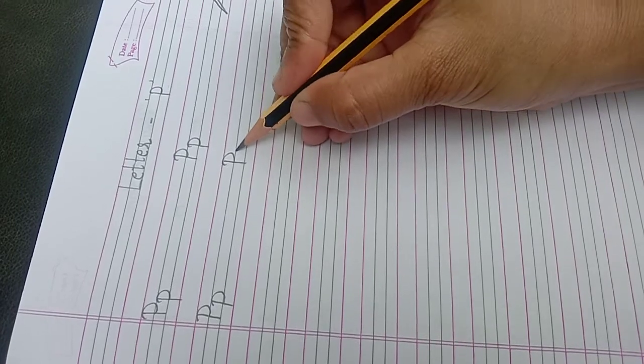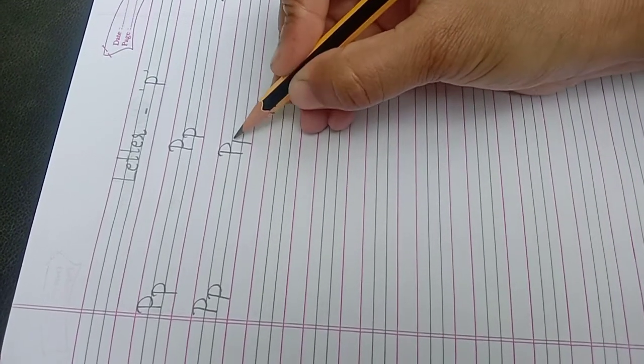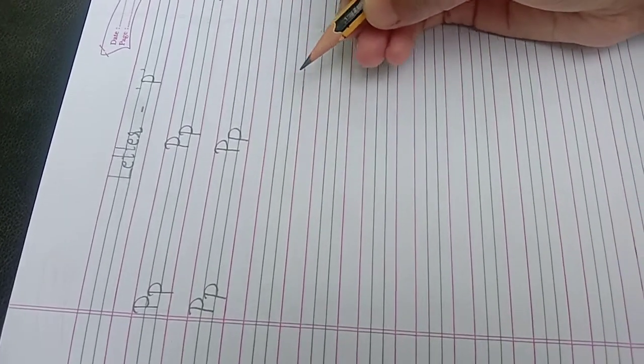And small P, you start from a middle line. Make a standing line, then half circle. P.